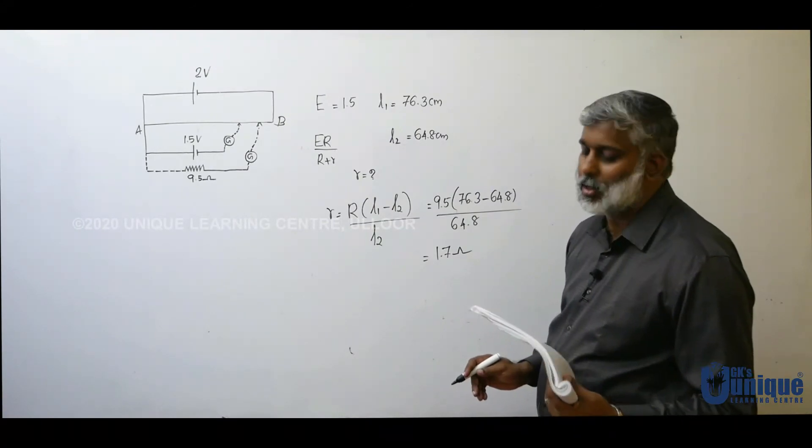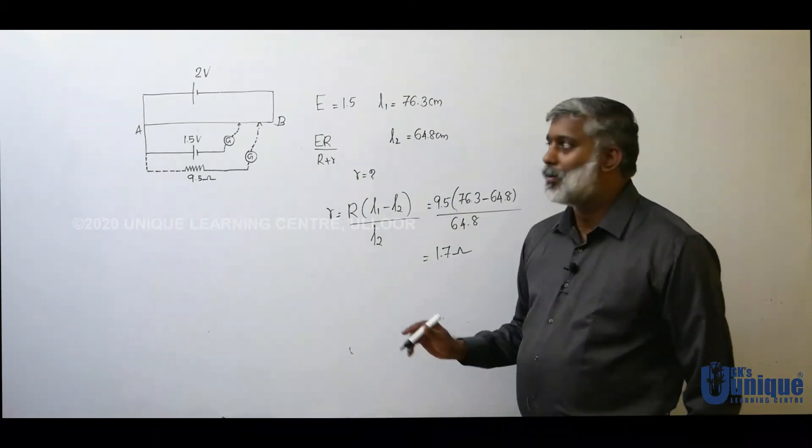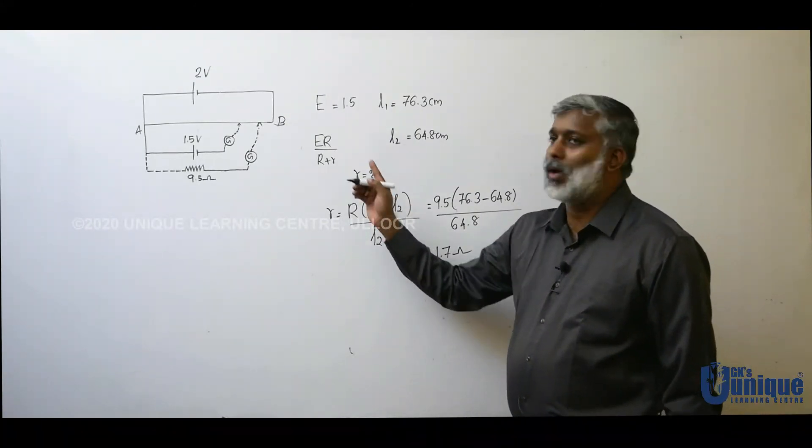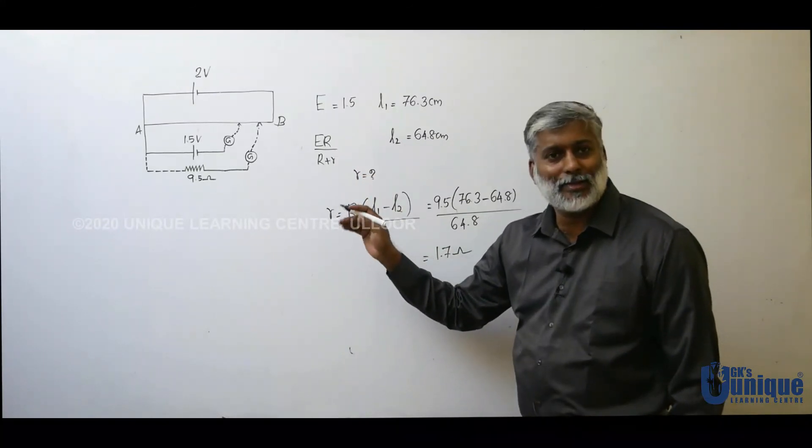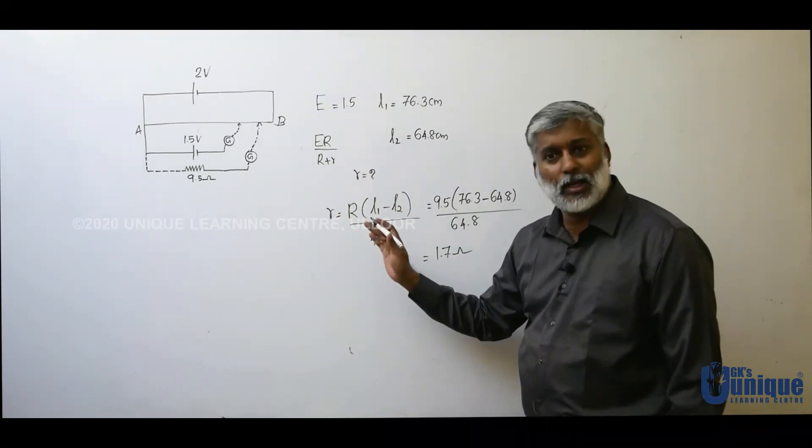So the internal resistance is denoted by r. So what is your objective of the experiment? Potentiometer and second experiment, internal resistance is calculated.